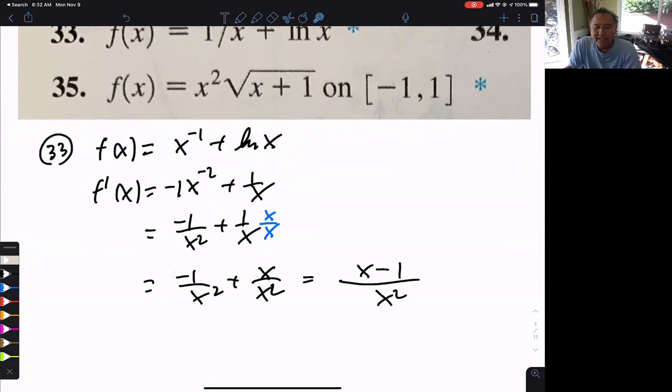So what is a critical point? A value of x where the derivative is 0 or does not exist. When does a fraction equal 0? A fraction equals 0 when the numerator is 0, as long as the denominator is not 0. So you set the numerator equal to 0, you get x equals 1. That is one of your critical points.